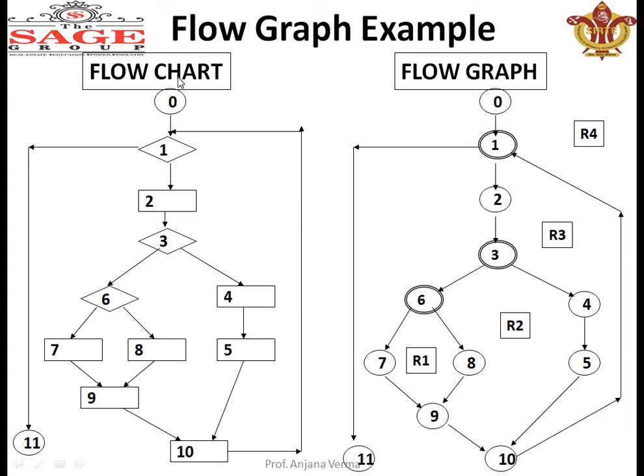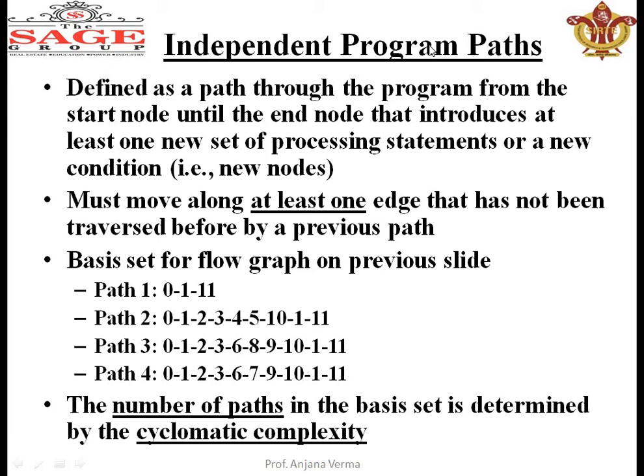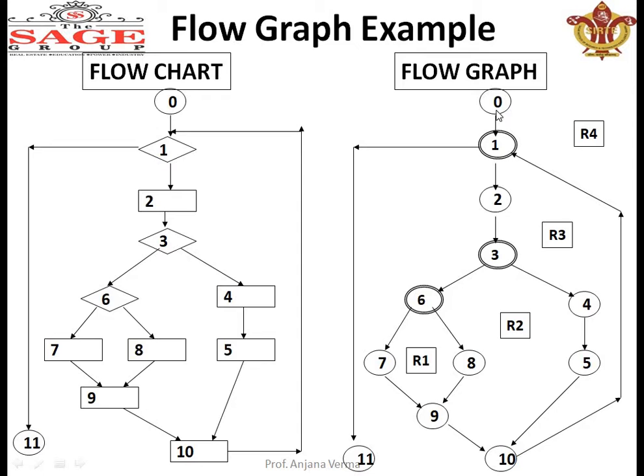Program notes show instructions, while double edges show conditional statements or predicate nodes. These flow lines show the flow of the graph. With their help we are making flow graphs. Now we will find out the independent paths from this. The independent path must move along at least one edge that has not been traversed before by a previous path. The basic paths are defined from the start node till the end node.